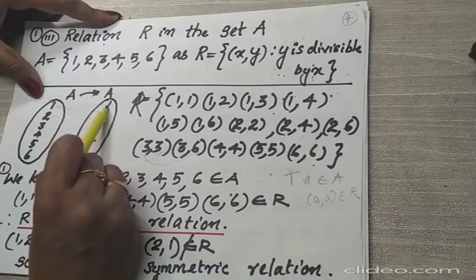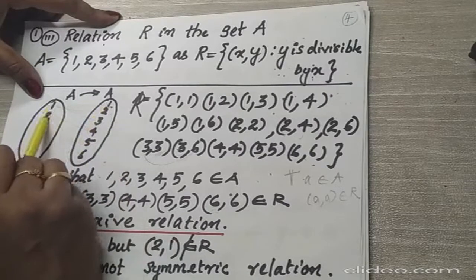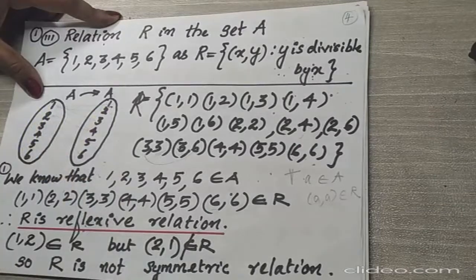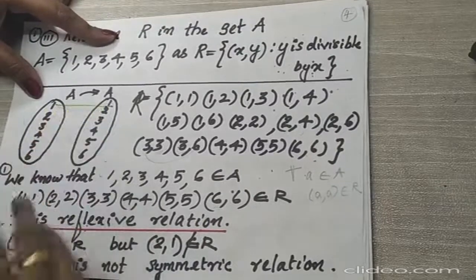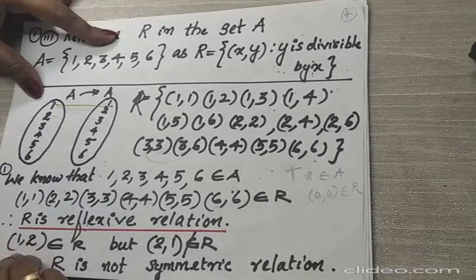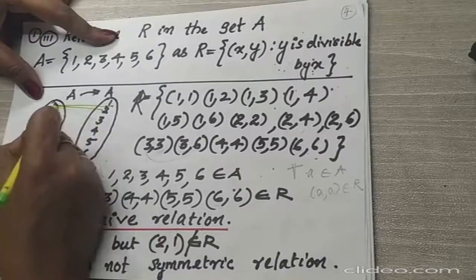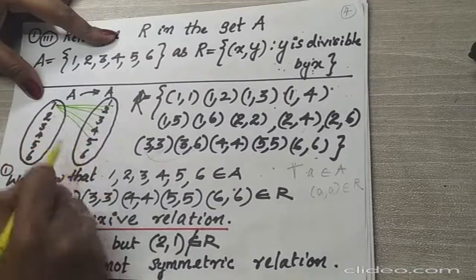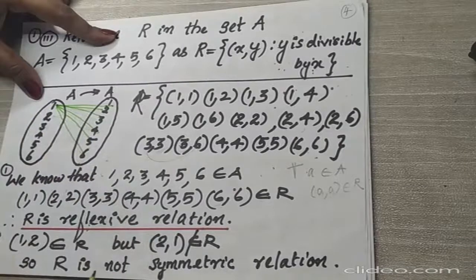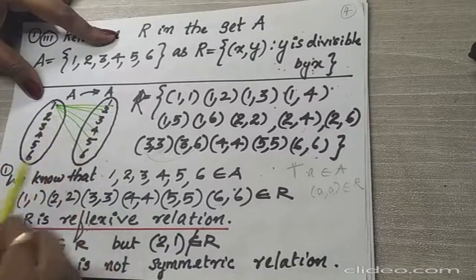If you take any element from here, the second element should be divisible by the first. So if I am selecting 1: 1 is divisible by 1. If selecting 2: 2, 3, 4, 5, and 6 are all divisible by 1. So the pairs (1,1), (1,2), (1,3), (1,4), (1,5), (1,6) are all in the relation.